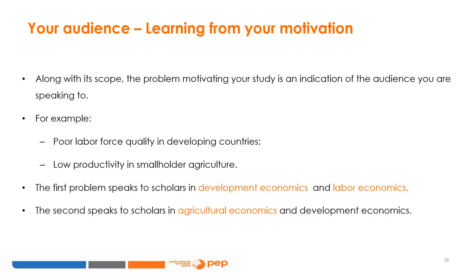A key criterion in the review process is whether the manuscript is a good fit for a particular journal and its readership. The motivation of the study can influence a journal editor's decision on the fitness of a submitted manuscript. Suppose, for example, that you state the motivation for your paper is 'poor labor force quality in the developing world.' If you submit it to the Journal of Agricultural Economics, that journal's editor will likely find your paper unfit for its readership. Based on the problem underlying your study, your audience is more likely to be found in a development journal, and to some extent a labor economics journal if the contributions have broader implications. The type of problem you study determines your audience.